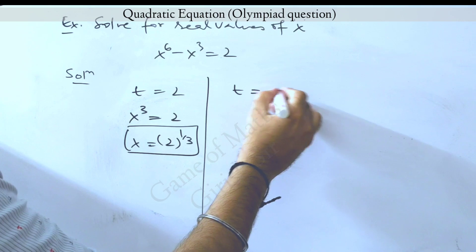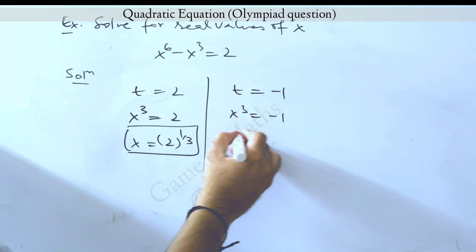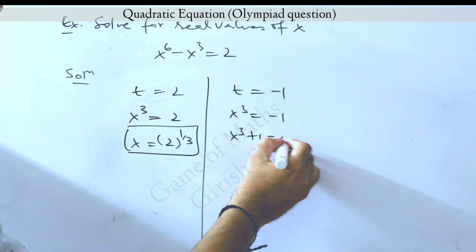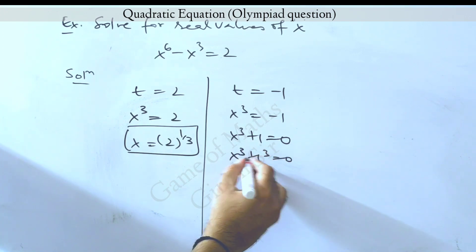The second value of t we obtained was minus 1. So now I put back again t equals x cube, which gives me x cube plus 1 equal to 0. Now using the formula for a cube plus b cube, I can rewrite like this.